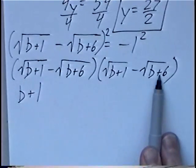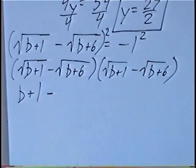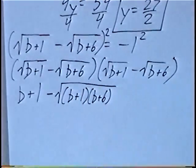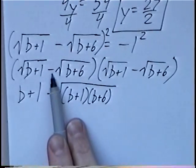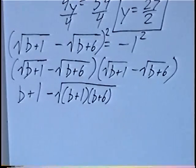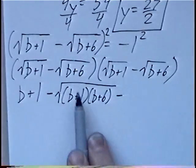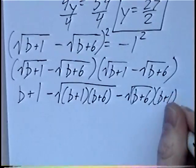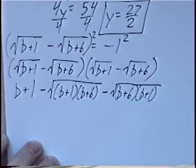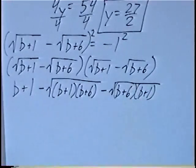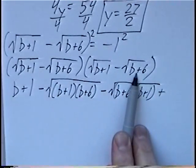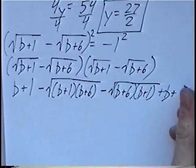Multiplying the outside terms: positive radical times a negative radical gives a negative, and b plus 1 times b plus 6 stays inside the radical. Multiplying the inside terms gives negative radical of b plus 6 times radical b plus 1, keeping the negative. Multiplying the last terms: negative radical b plus 6 times negative radical b plus 6 — the negatives multiply to a positive, and the radicals cancel, leaving b plus 6.